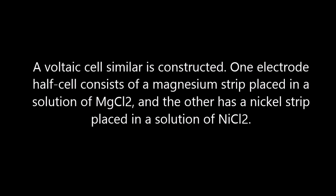A voltaic cell is constructed. One electrode half-cell consists of a magnesium strip placed in a solution of magnesium chloride, and the other has a nickel strip placed in a solution of nickel chloride.